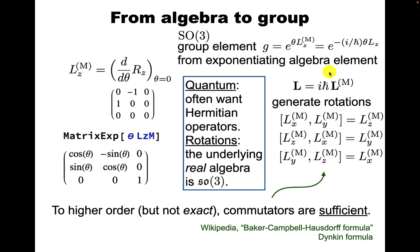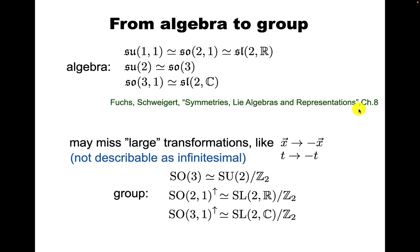So these commutators are sufficient to write a group element up to whatever order you want. It is not in general sufficient to get the exact group element because there can be things that are not captured by series expansion. These algebras - I haven't defined most of these yet - SO3 is related to another algebra in a direct way, but the corresponding groups are not the same. You can miss large transformations like flipping all the axes or flipping time. For now, I just want to warn you, the generators only capture the local structure of the symmetry, not necessarily the global structure.